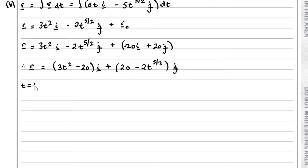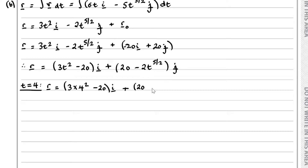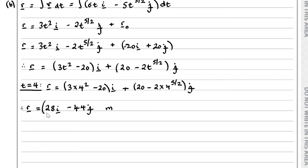So r equals 3t squared minus 20 in the i component, and 20 minus 2t to the 5 over 2 in the j component. When t equals 4, substituting in: r equals 3 times 4 squared minus 20 in the i component, and 20 minus 2 times 4 to the power of 5 over 2 in the j component. Therefore r equals 28i minus 44j metres.